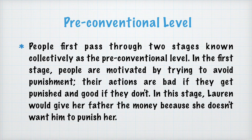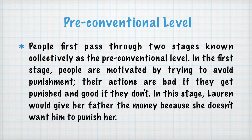The first level is the pre-conventional level. In this, the first stage: people are motivated by trying to avoid punishment. Their actions are bad if they get punished, and good if they don't. For example, Lauren is a girl who gives her father the money because she doesn't want him to punish her.